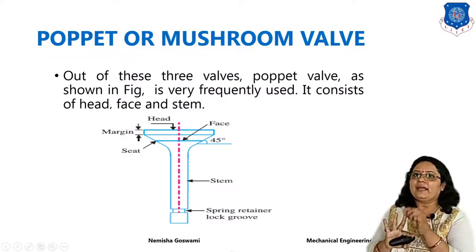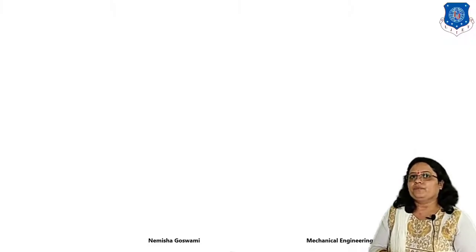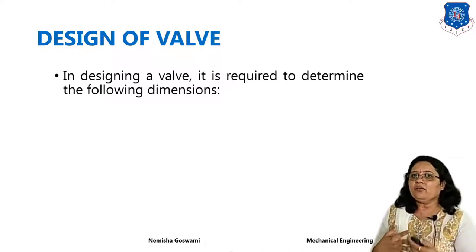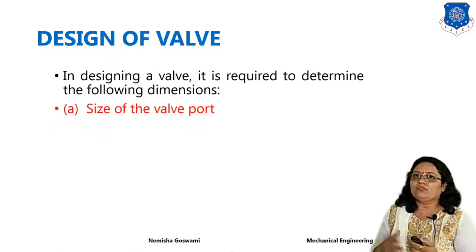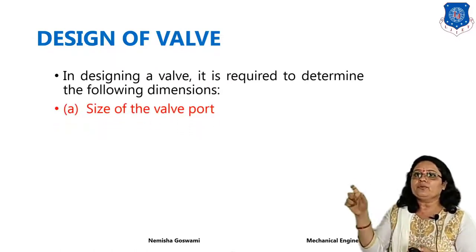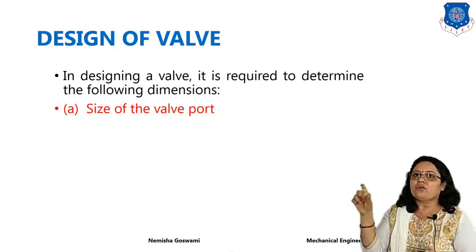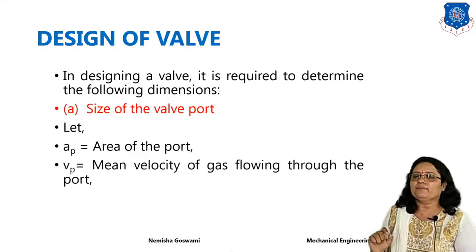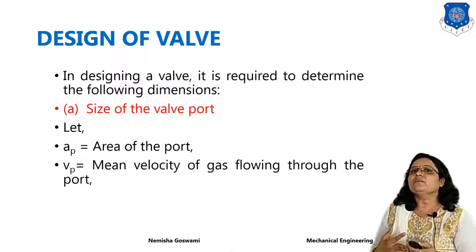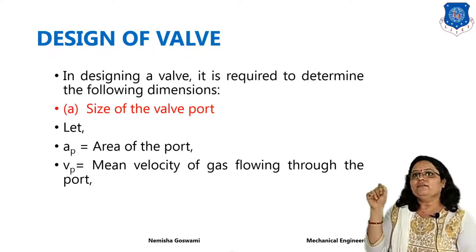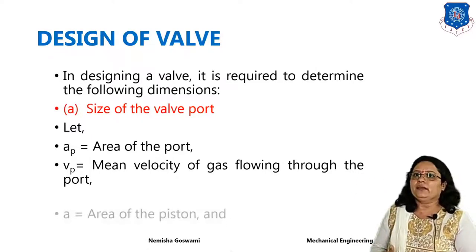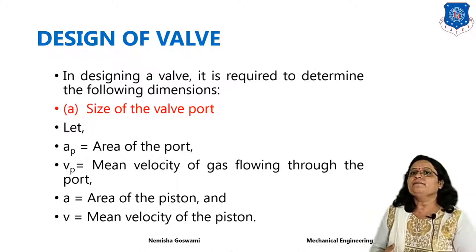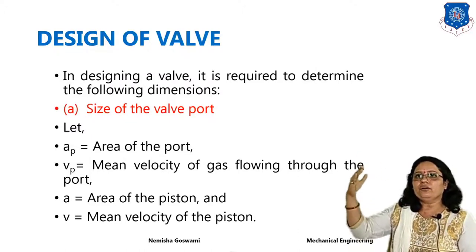The puppet valve basically consists of hat, face, and stem. Now, design of the valve — while designing the valve, it is required to first determine the following dimensions. First, you have to find out the size of the valve port. Here Ap is the area of the port, and Vp is the mean velocity of gas flowing through the port in meters per second. A is the area of the piston, and V is the mean velocity of the piston. These are the four basic core fundamentals.